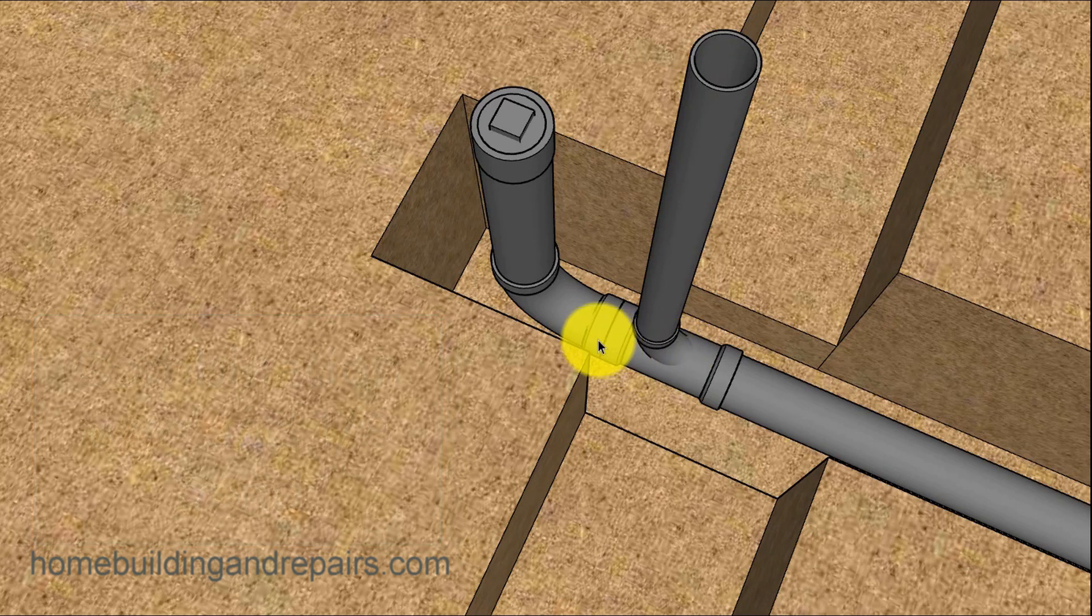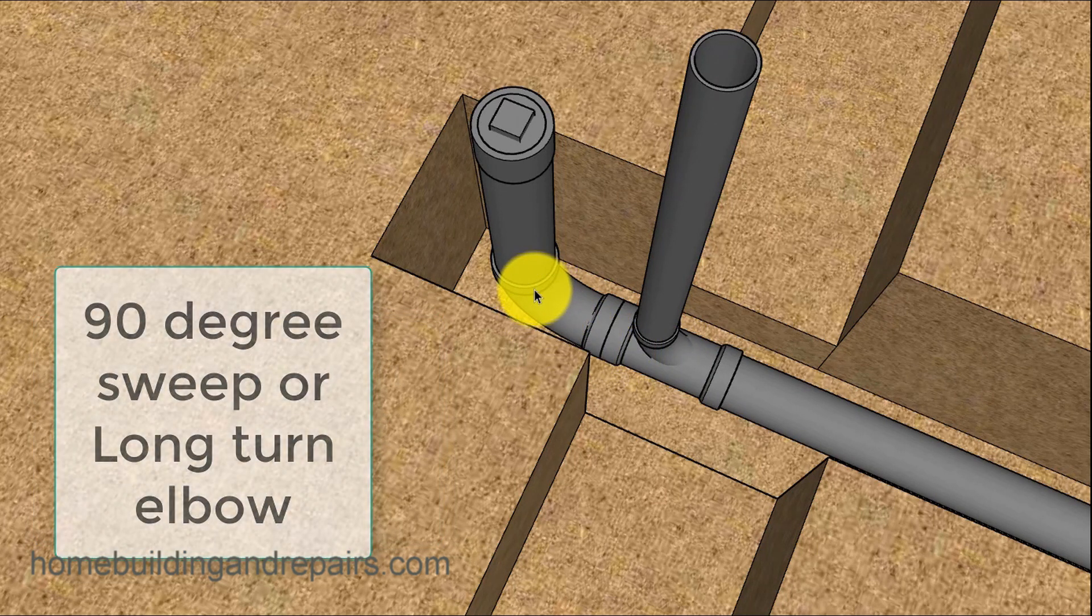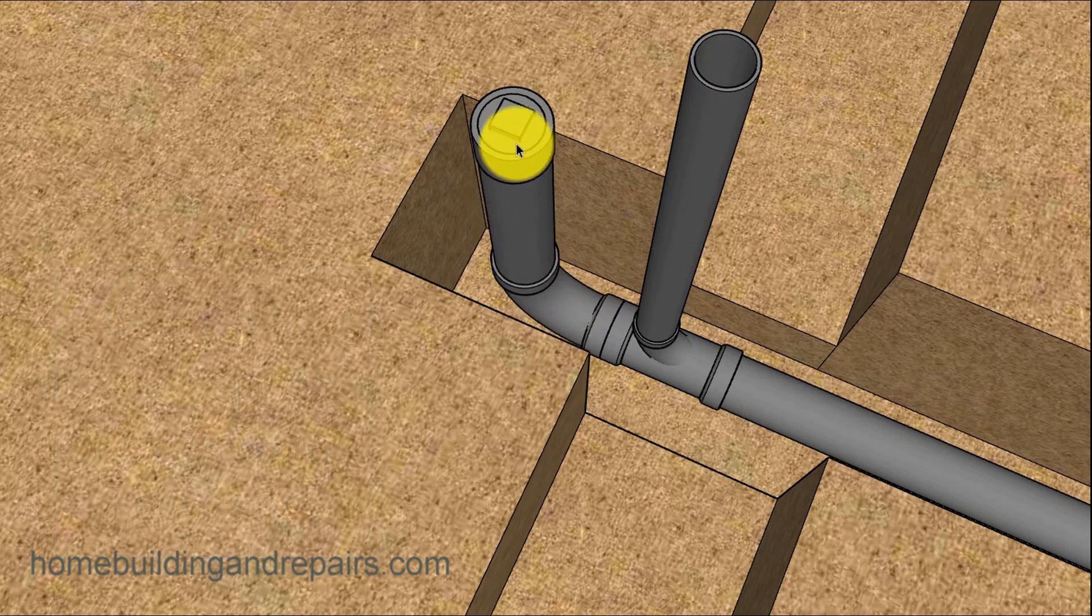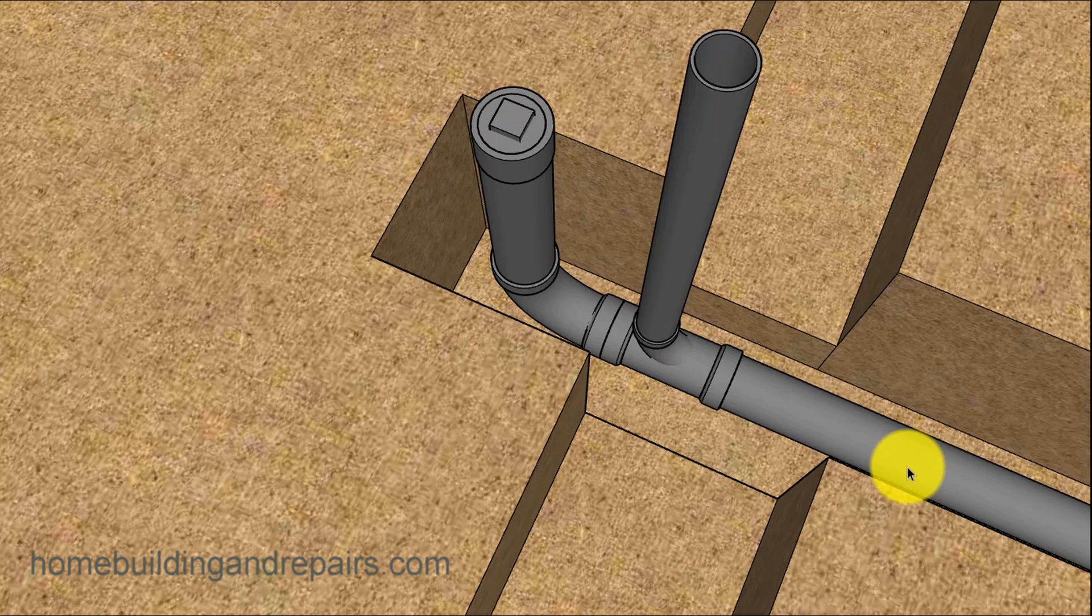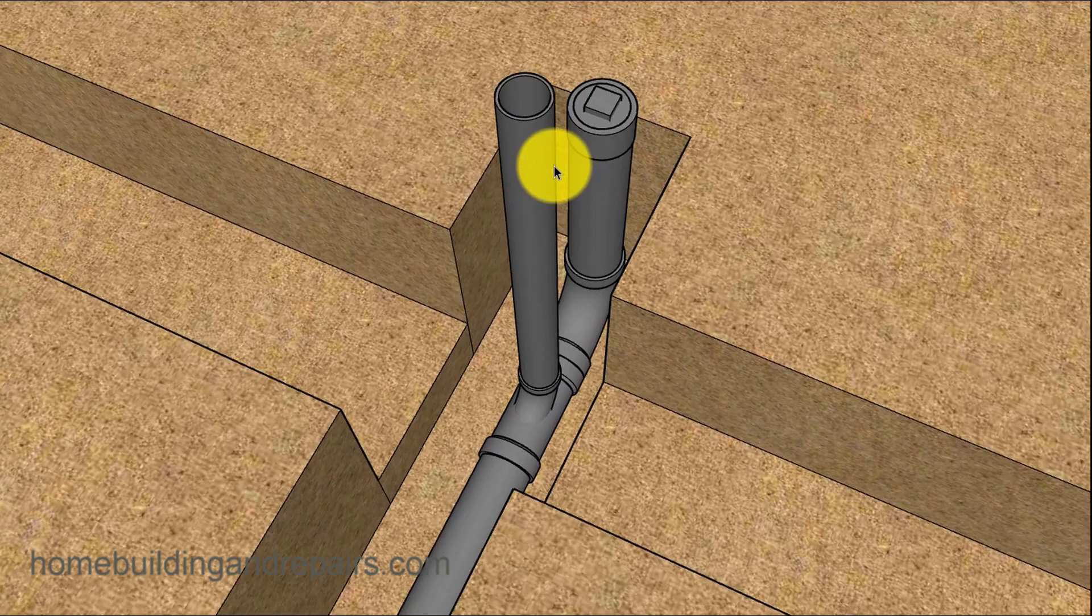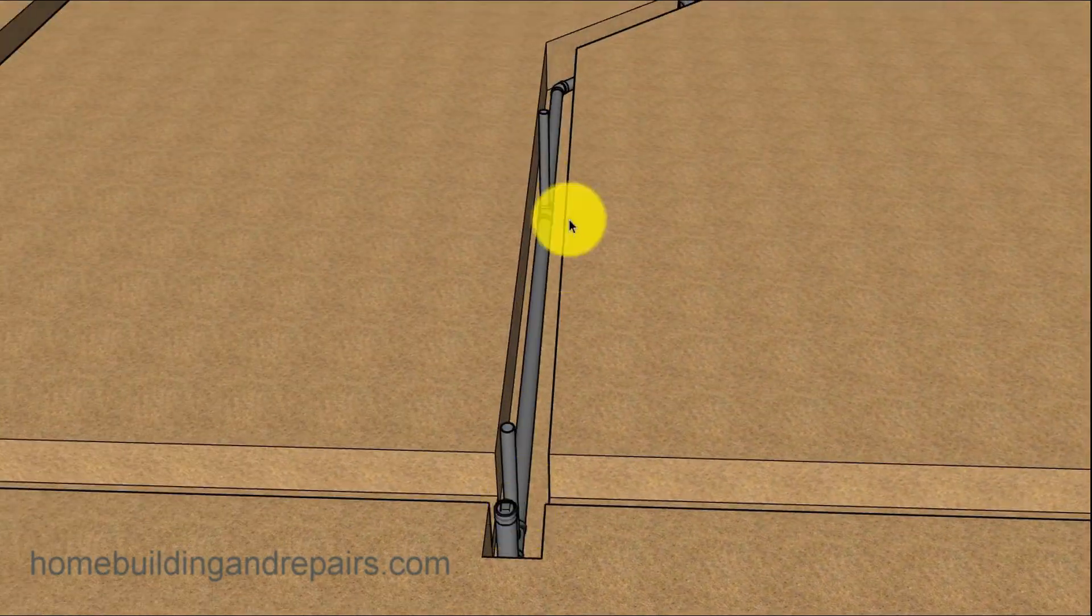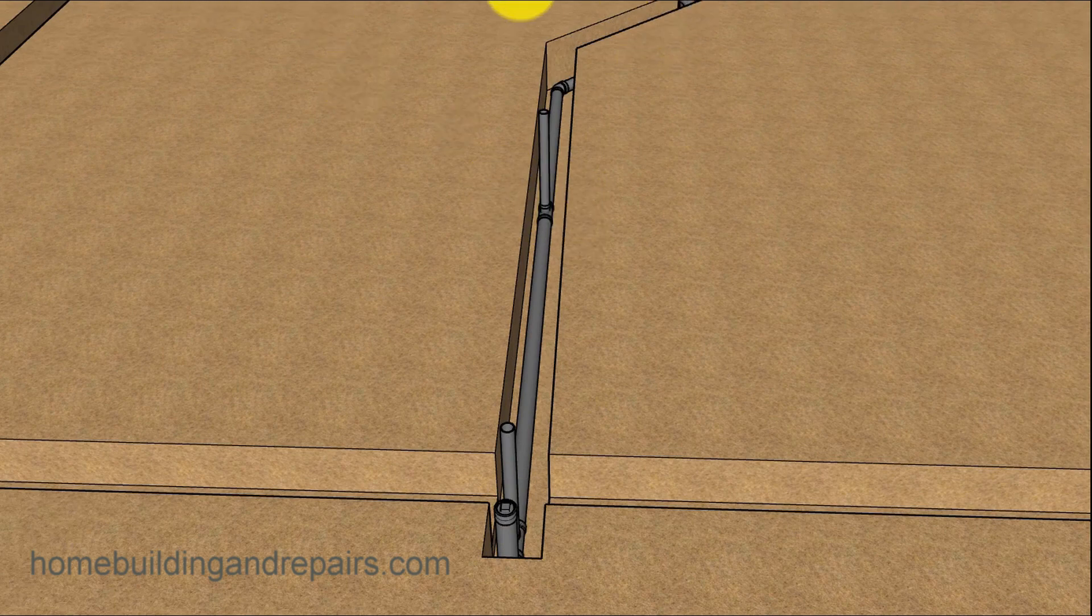This is a 90 degree sweep or a 90 degree long turn elbow. And this is going to be our clean out so that if any of the plumbing gets backed up somehow or clogged, someone will be able to come in here with a plumbing snake and clean the drain line out. Hopefully another view of it there and another view of it here.